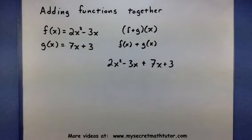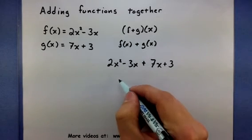In fact, because of the two functions I chose, I can actually combine these x's right here. So a minus 3x and a plus 7x, yeah, those guys actually combine.